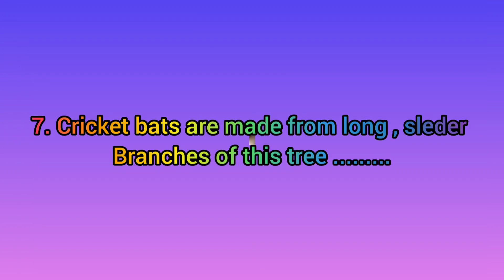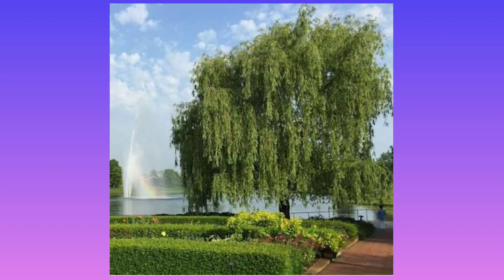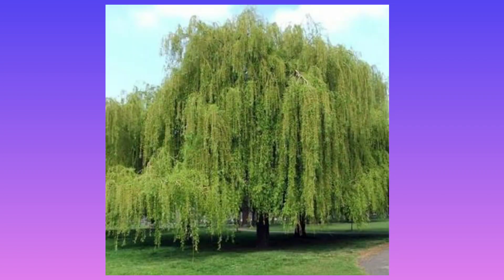Seventh one: cricket bats are made from the long slender branches of this tree. Which tree is this, children? That's willow. You all like to play cricket — the bat you take to the ground is prepared from willow trees. Willow is found in the region of Kashmir and we can make four different types of bats from this tree. It is a lightweight and hardwood.